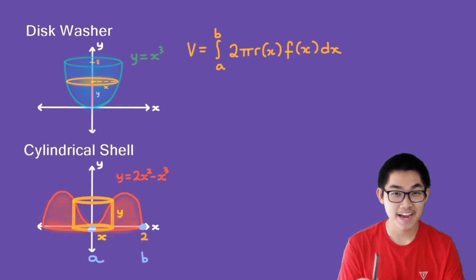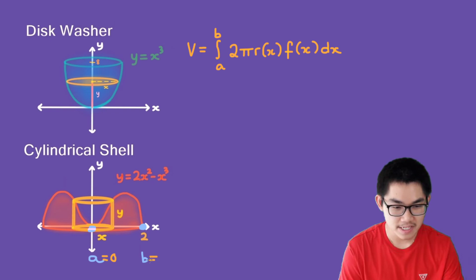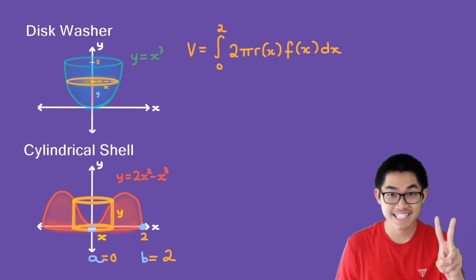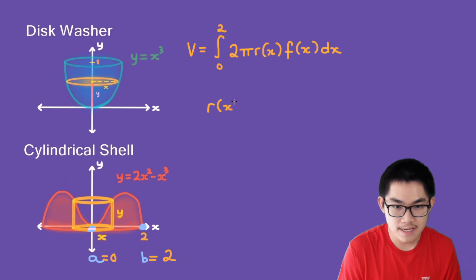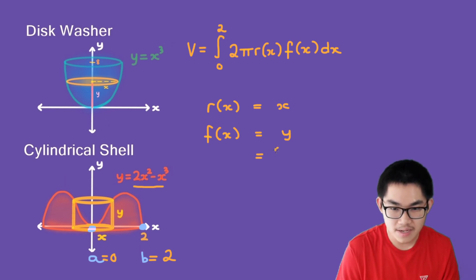Step 1: find a and b. Since a is at the center, a = 0, and b = 2, so the integral goes from 0 to 2. Step 2: find the radius and height. The radius r(x) = x, since it's the distance from the y-axis to the shell. The height f(x) = y = 2x² − x³.